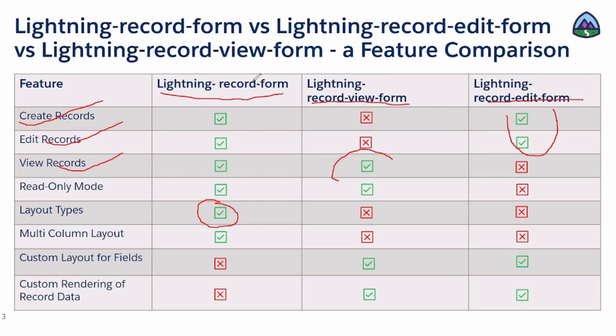Because you can only view data with the lightning record view form, choosing layout types is not allowed. And with the edit form, you cannot choose layout types and you cannot enable the read-only mode either. But because view form and edit form are specifically dealing with specific operations on data, you can get a custom layout for the fields and also decide the custom rendering of the data.